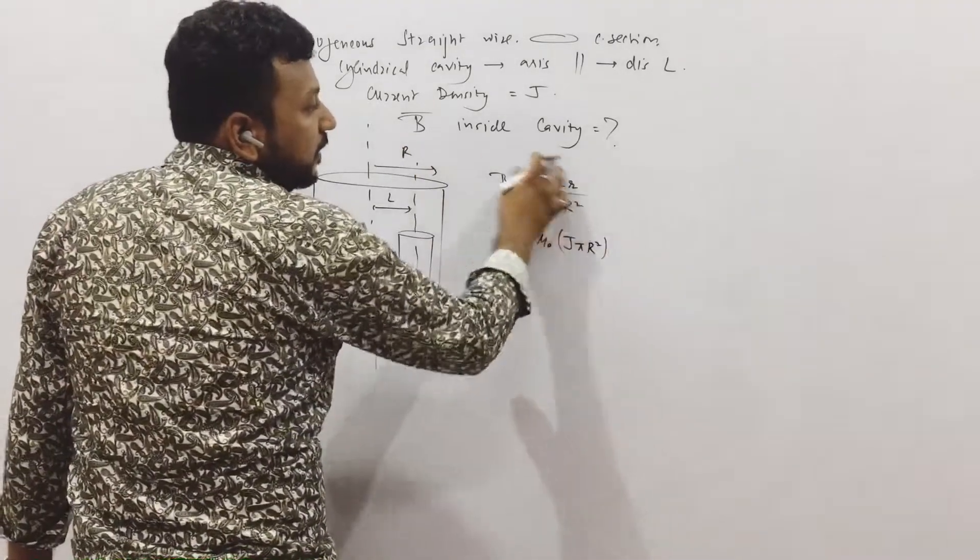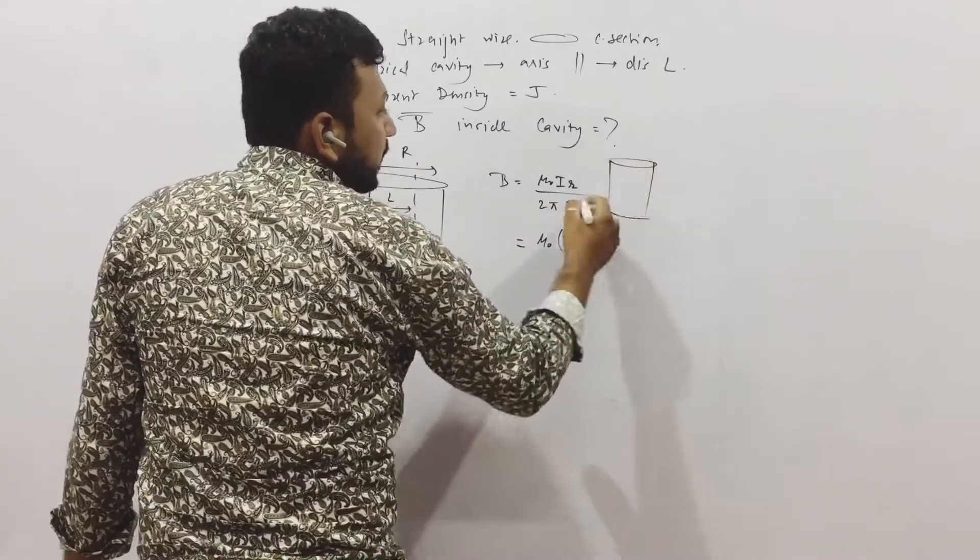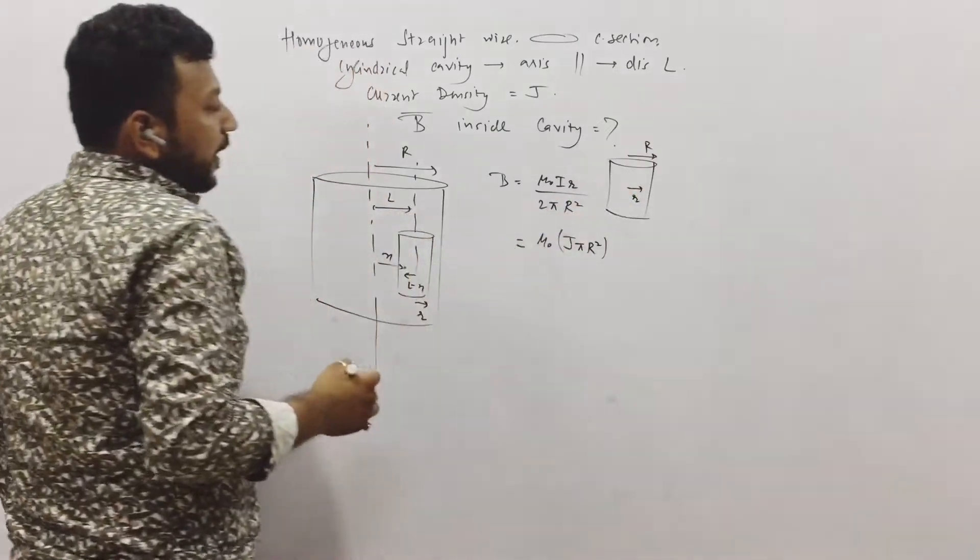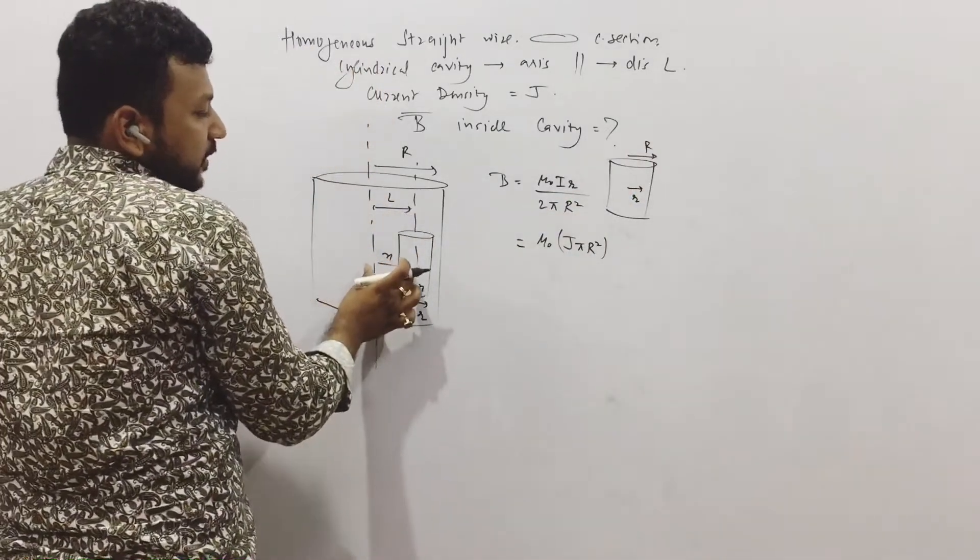This is the general formula. I hope you know this. This is the formula for the radius r and finding the magnitude at distance r. Here we are finding the magnitude at distance x.